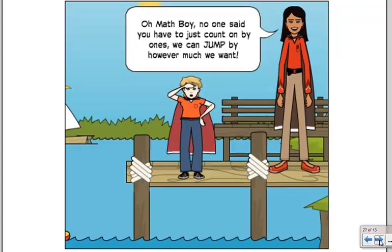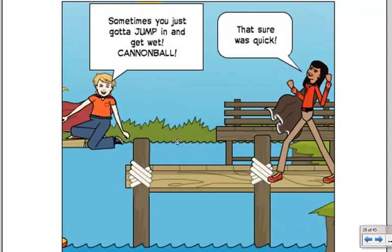And Math Girl says, oh Math Boy, no one said you have to count on by ones, we can jump by however much we want. So Math Boy says, sometimes you just got to jump in and get wet, cannonball. And Math Girl says, that sure was quick.